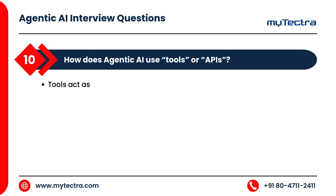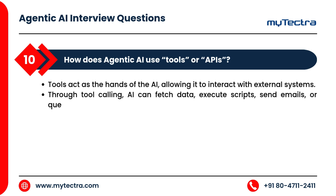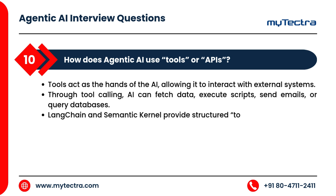How does agentic AI use tools or APIs? Tools act as the hands of the AI, allowing it to interact with external systems. Through tool calling, AI can fetch data, execute scripts, send emails, or query databases. LangChain and Semantic Kernel provide structured tool use capabilities.